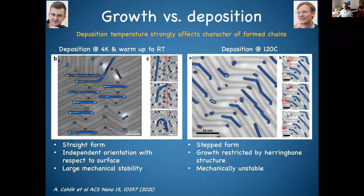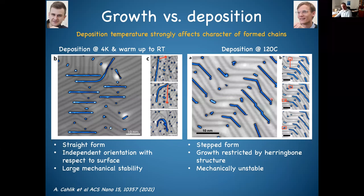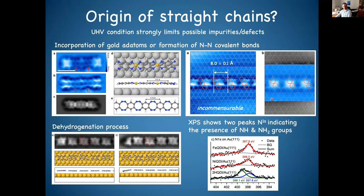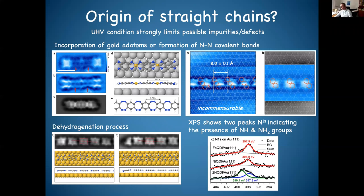There is a huge difference in mechanical response between the two types of chains. Also, the stripe chains show some bright spots on STM imaging that are absent on the coiled chains. XPS spectra still show the signature of two nitrogen species, suggesting the system is not simply a metal-organic or nitrogen chain. The incommensuration of the system further supports this interpretation.